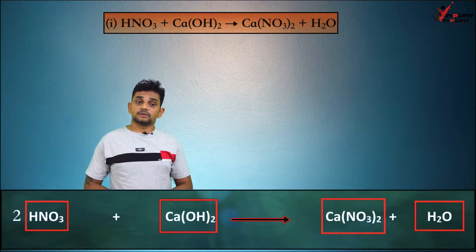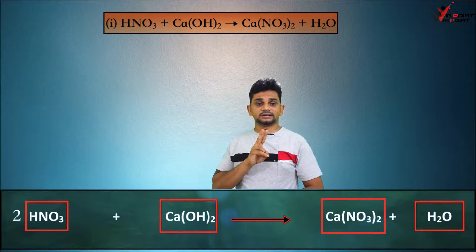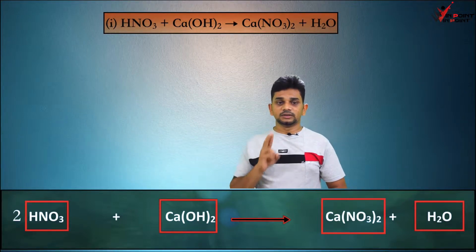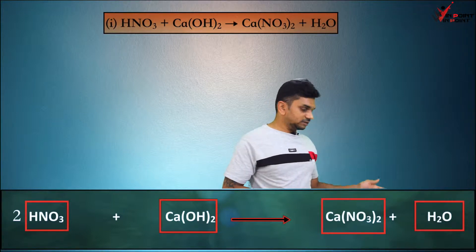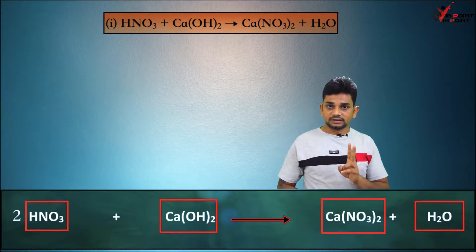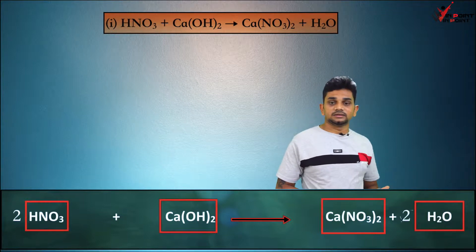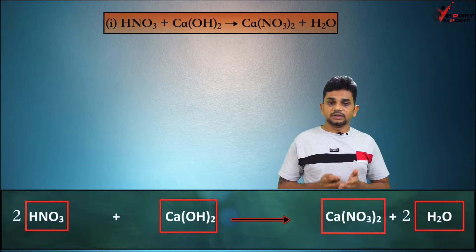Now we count number of hydrogen. In the reactant side: 2 HNO3 gives 2 hydrogen, and Ca(OH)2 gives 2 hydrogen — total 4 hydrogen. In the product side H2O has 2 hydrogen, so we add a 2. Now it is balanced. The balanced equation is 2 HNO3 + Ca(OH)2 → Ca(NO3)2 + 2 H2O.